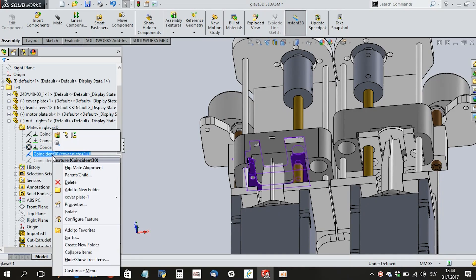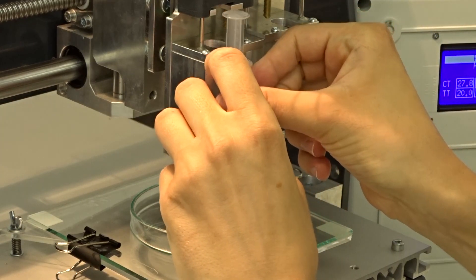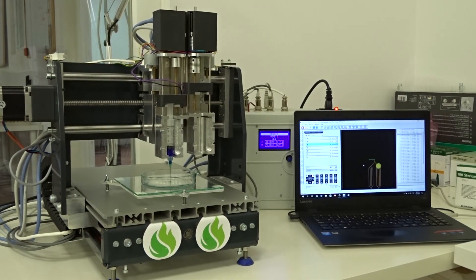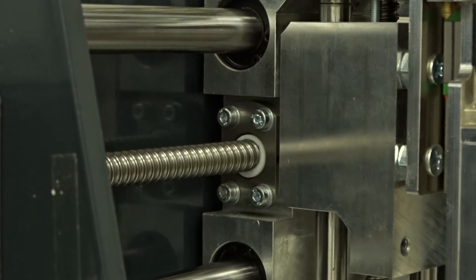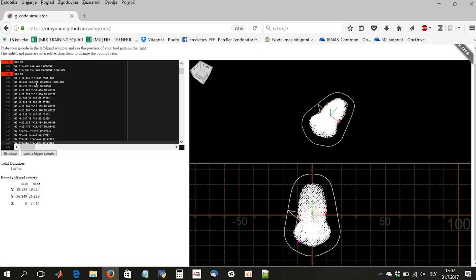This is why we at Irna Symbial Lab started the Vitaprint project. Its idea is to create a fully open-source and customizable 3D bioprinting platform, which includes open hardware, fabrication methods and calibration protocols, as well as demo files, the full package of 3D biofabrication.